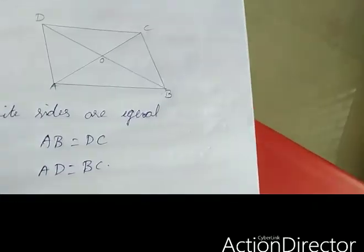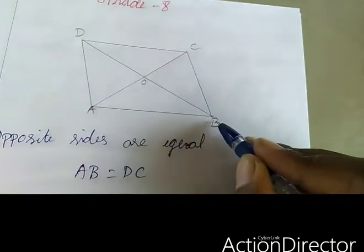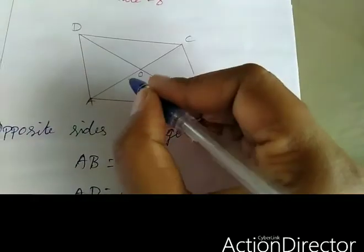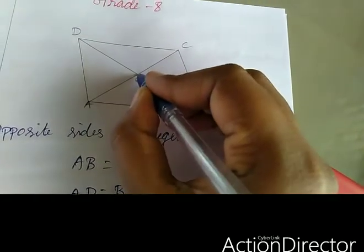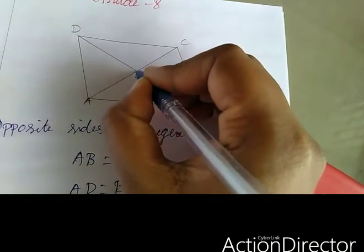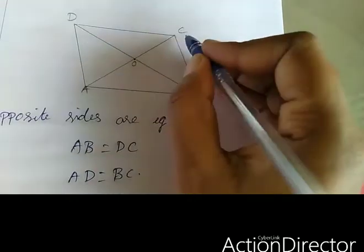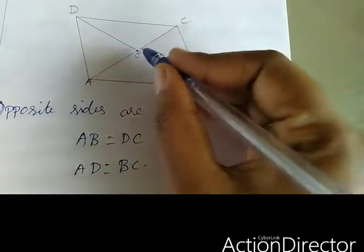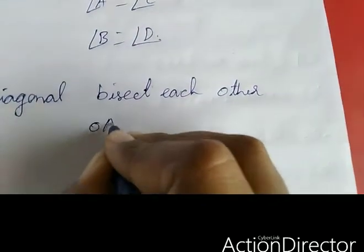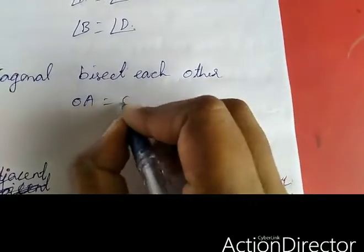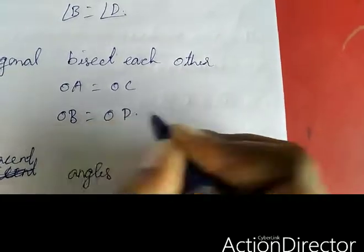As well as, the diagonals bisect each other. Here AC and DB are the diagonals. The two diagonals meet at one point, and the opposite sides will be equal — that is OA equal to OC, as well as OB equal to OD.